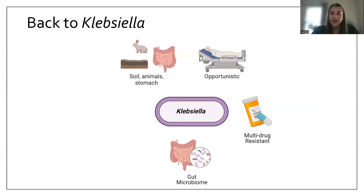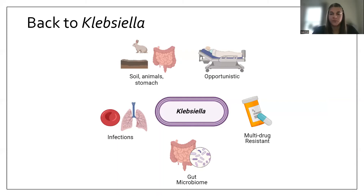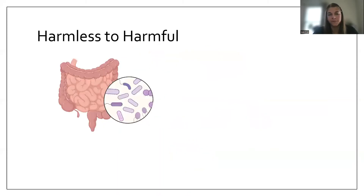Klebsiella can be found in the gut microbiome, and in that setting it is considered asymptomatic — you can have Klebsiella in your gut but it's not causing an actual infection when it is contained in the gut. However, when Klebsiella gets to a place in the body that's not the gut, like the lungs or the bloodstream, that's where it can make you really sick or cause an infection.